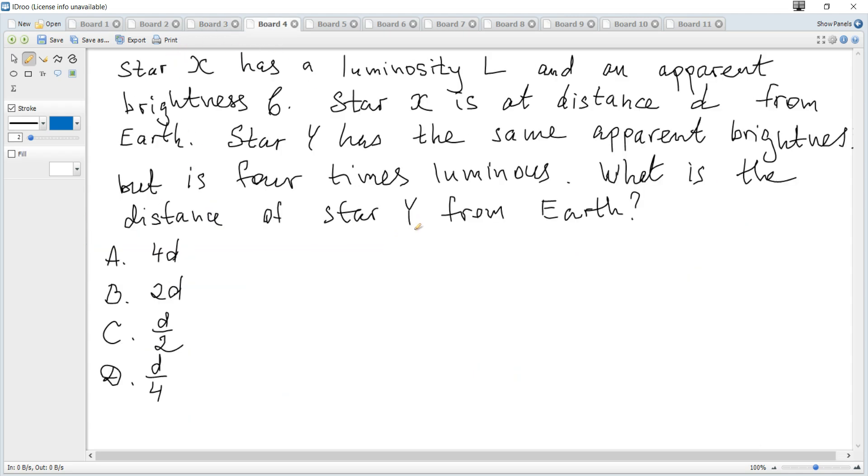Star X has luminosity L and apparent brightness B. Star X is at distance D from Earth. Star Y has the same apparent brightness but is 4 times luminous. What is the distance of star Y from Earth?